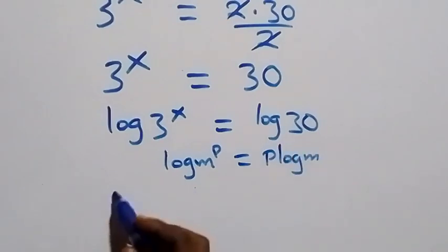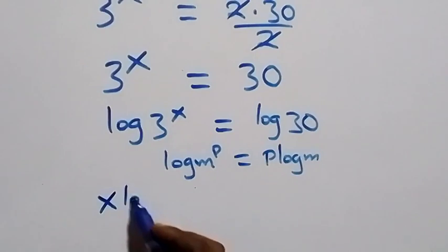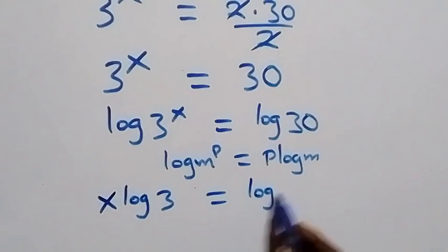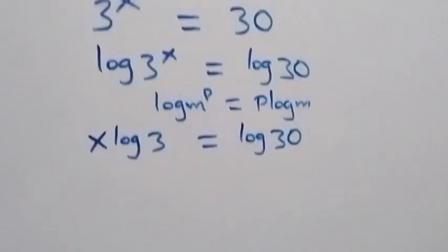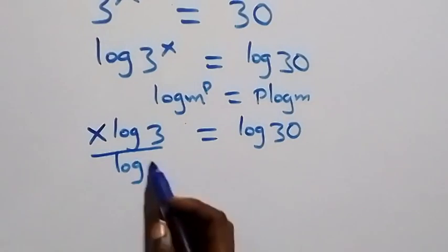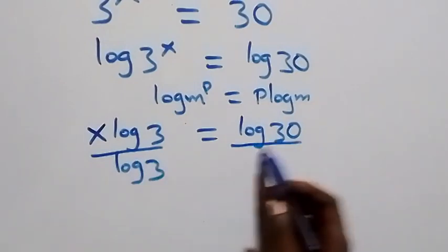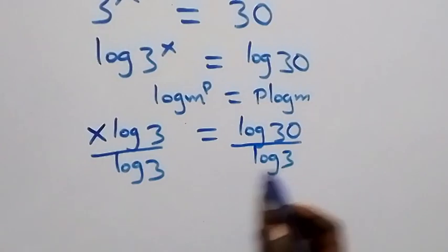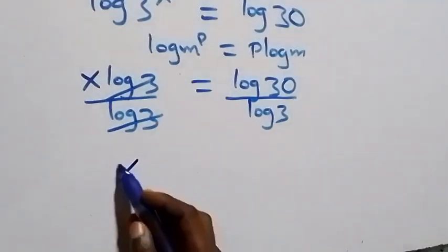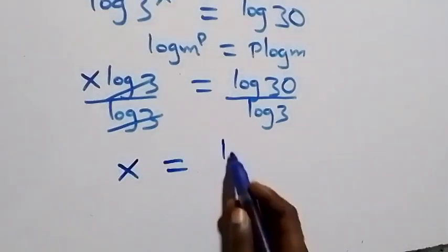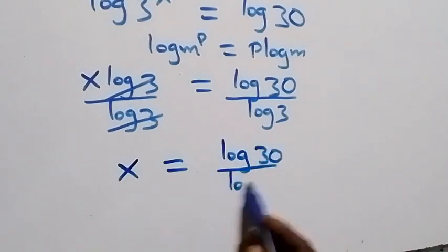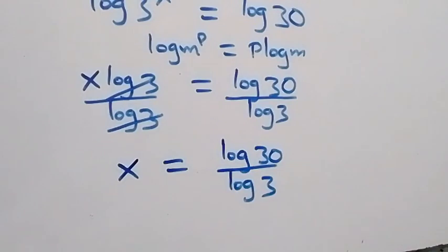This becomes x times log 3 equals log 30. From here we divide both sides by log 3 — divide this side by log 3 and also divide the other side by log 3. The log 3 terms cancel each other, and we are left with x equals log 30 over log 3.